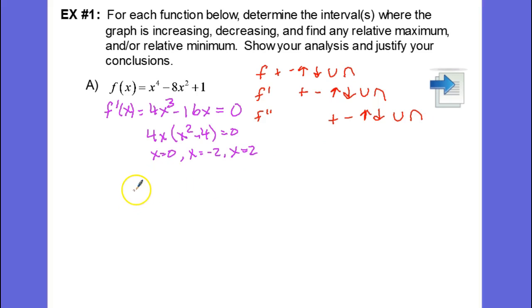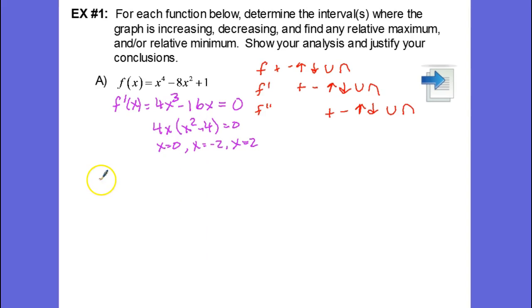Now I'm also going to make a little table that will make it easy for me to evaluate the sign of my derivative for different x values. So what I'm going to do is put my critical values on this number line, so I have negative 2, 0, and 2, and then I want to find some test values on each of these intervals. So negative 3 would be on this interval, negative 1, positive 1, and positive 3.